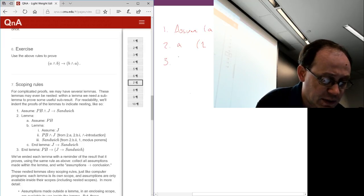For the next step, we're going to get B, which is again from 1 by and elimination.